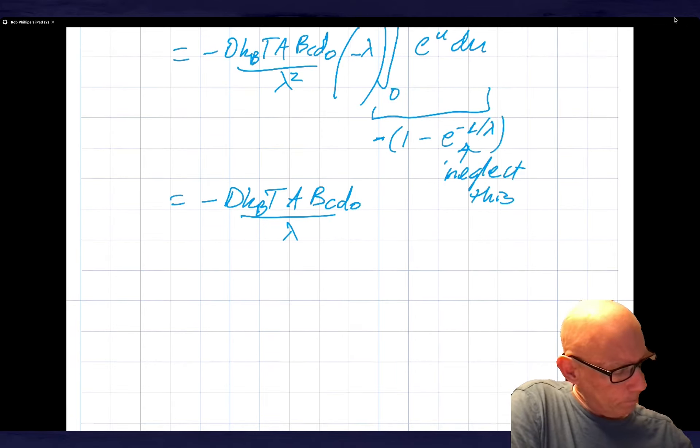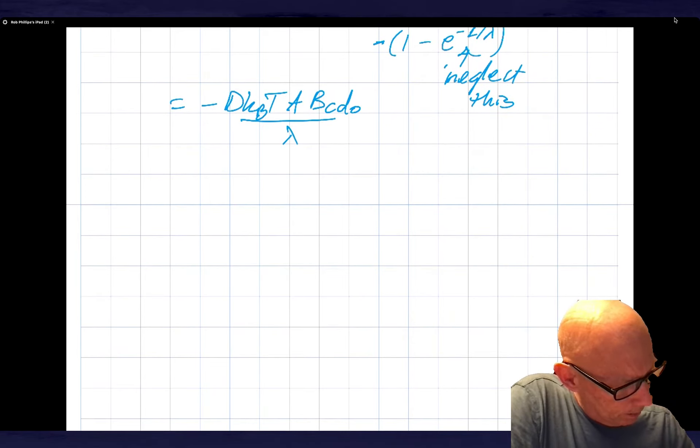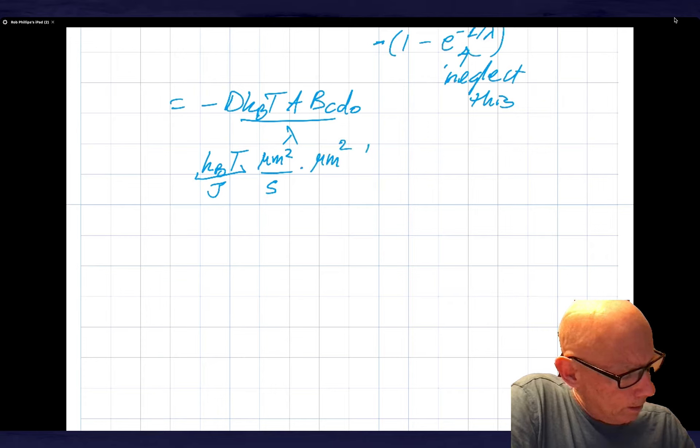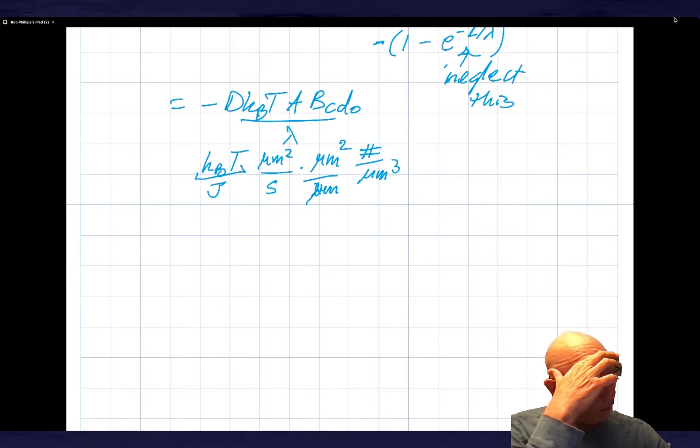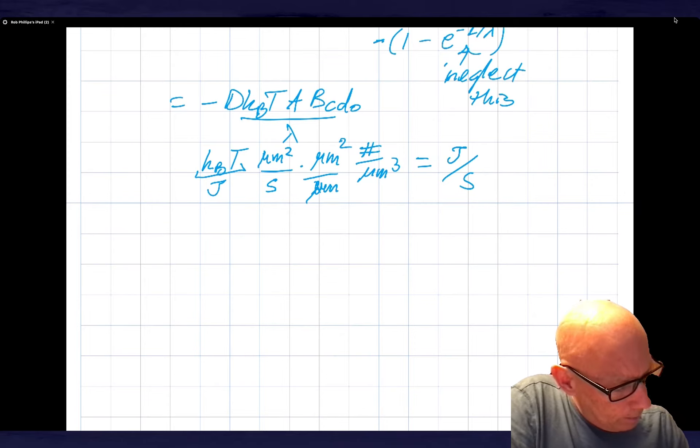So let's see if that makes sense in terms of units. So this is going to be kBT is energy. So that's joules. And then D is microns squared per second. A is microns squared. Bicoid 0 is number over microns cubed. And then lambda downstairs is microns. So yeah, that leaves me with joules per second. So that looks good. So that's our energy release rate.